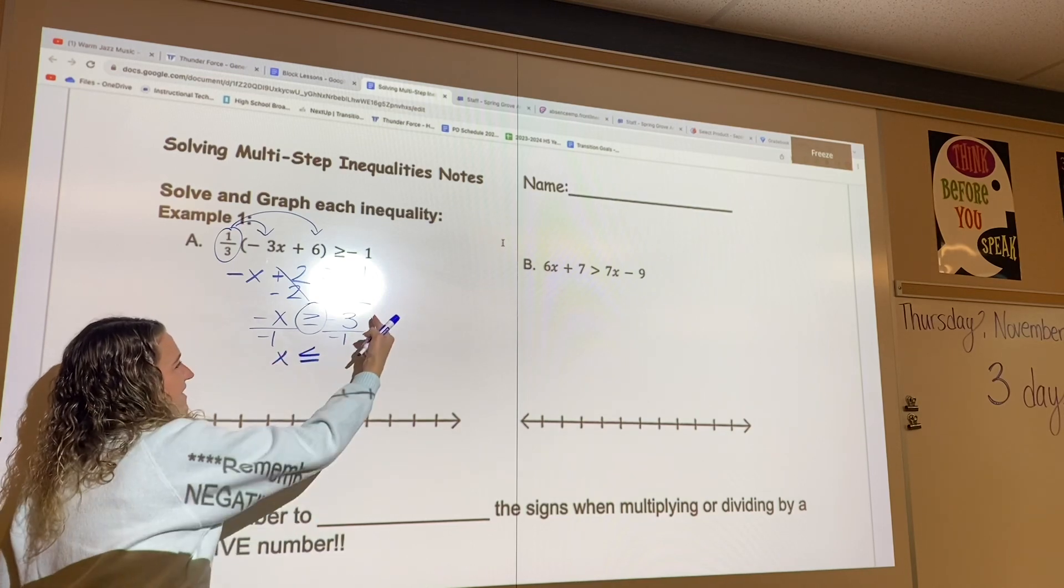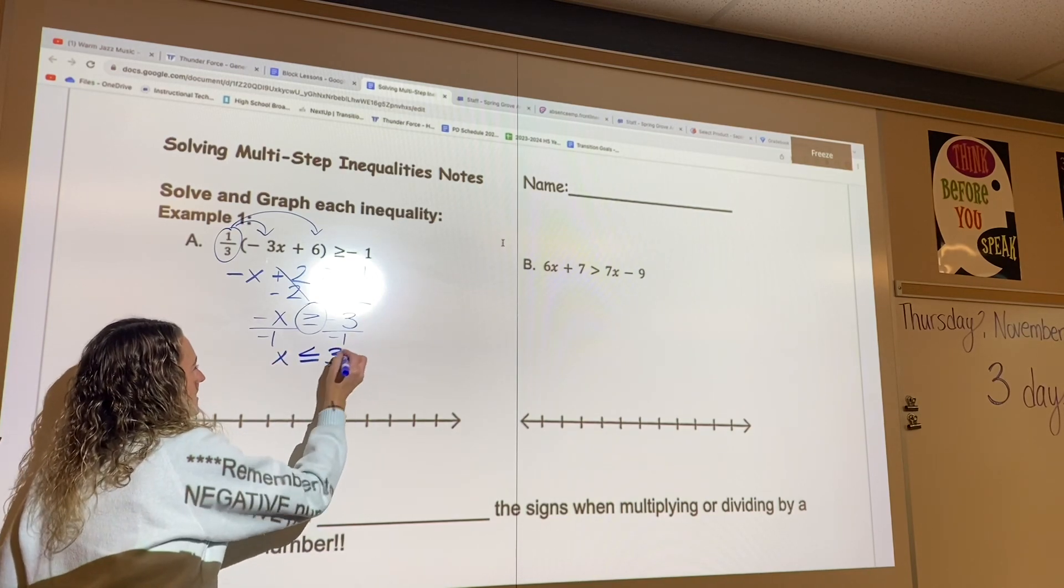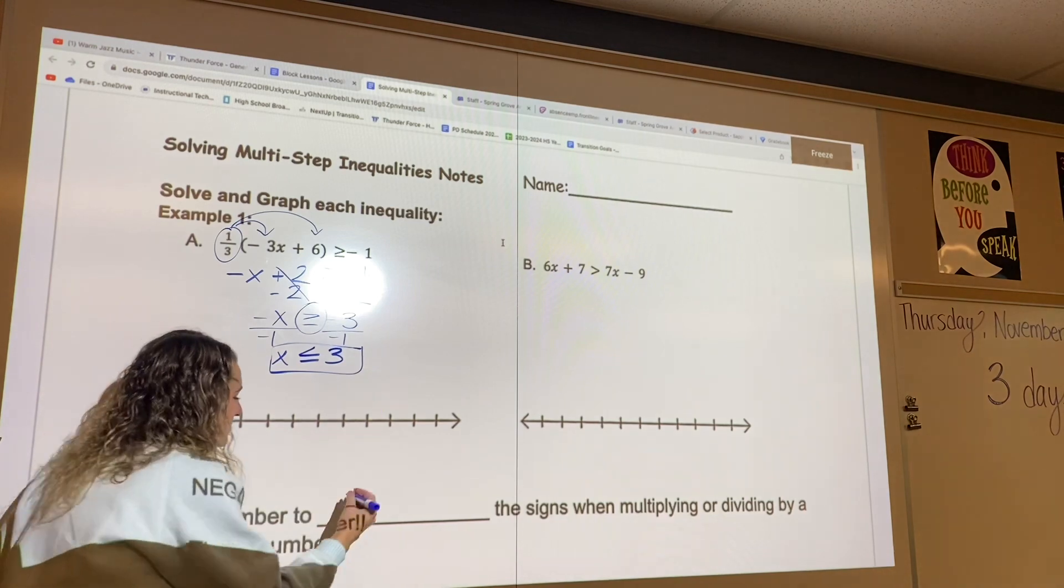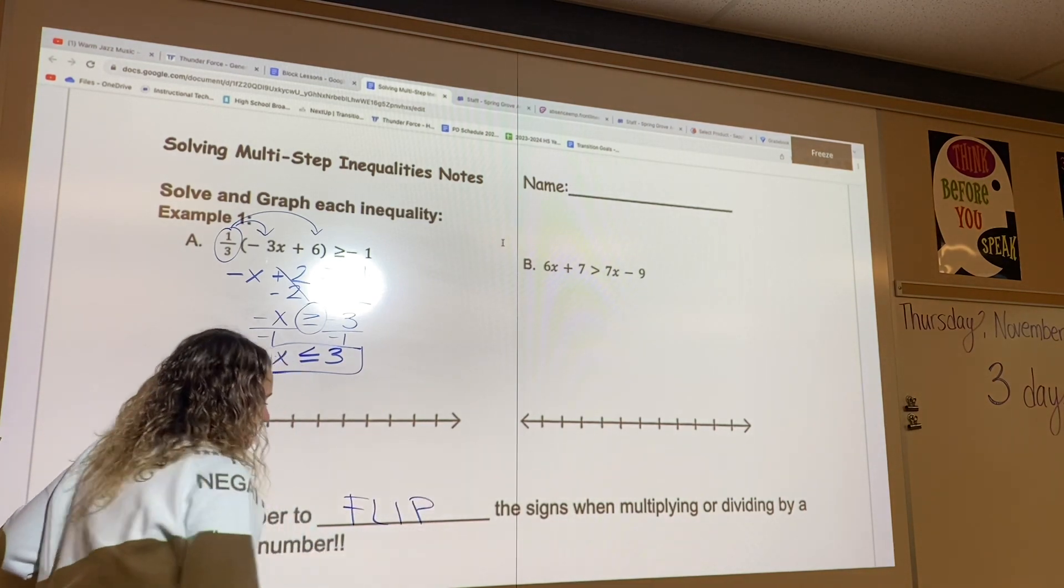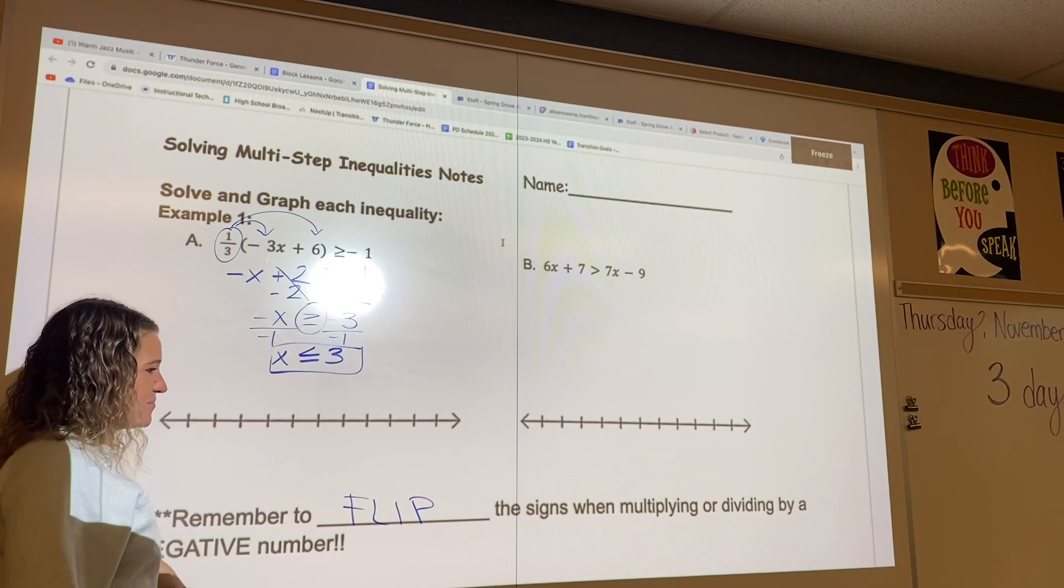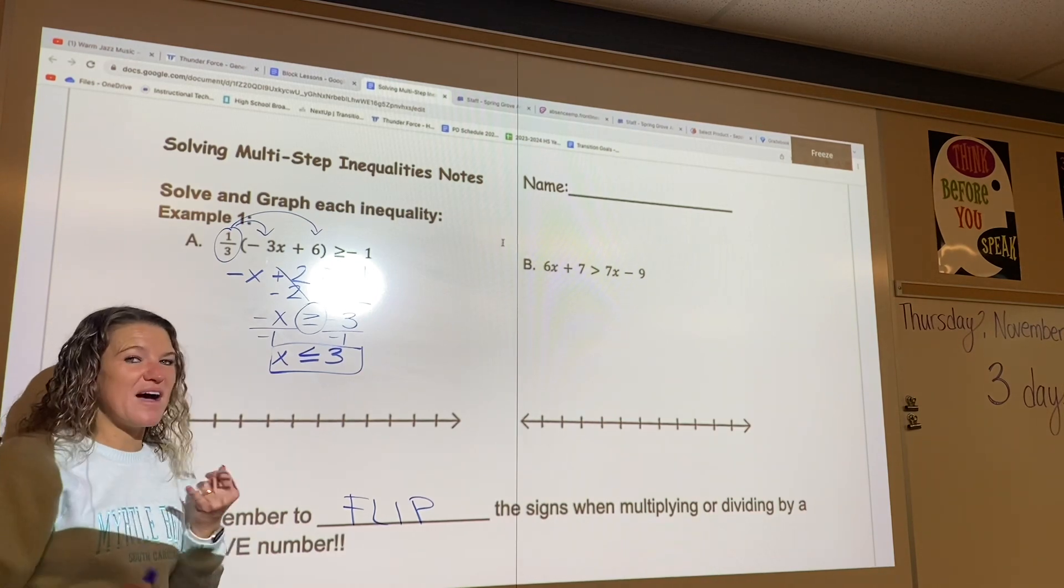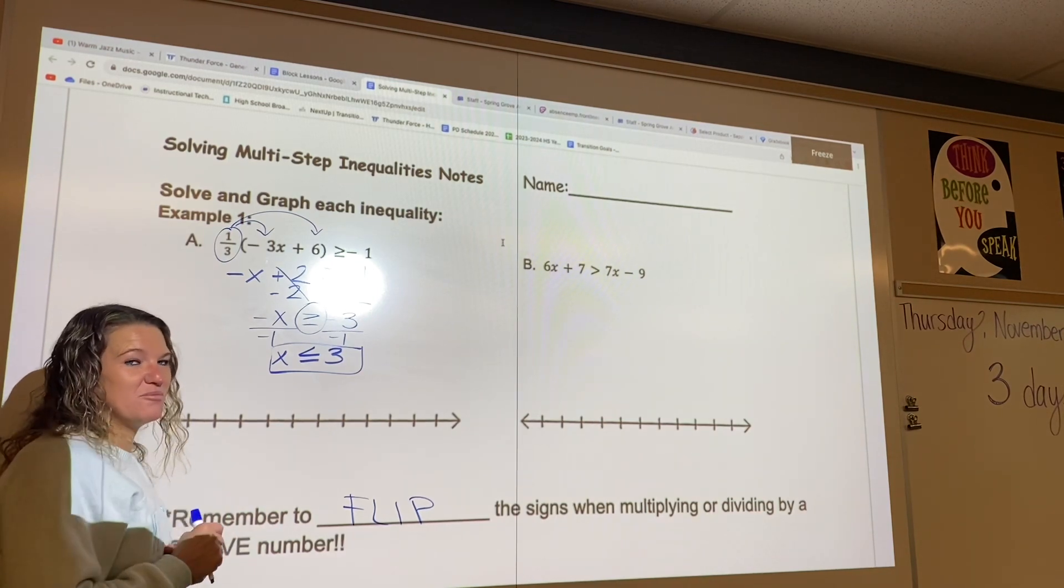We'll bring down our x, and a negative divided by negative is a positive. So I'm going to make sure I fill this blank in here. Flip the sign whenever you multiply or divide by a negative number when you're using inequalities.